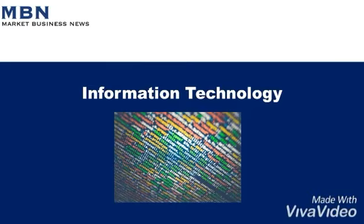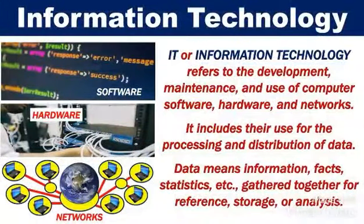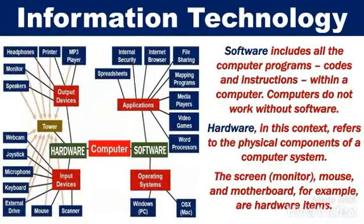What is information technology? IT, or information technology, refers to the development, maintenance, and use of computer software, hardware, and networks. It includes their use for the processing and distribution of data. Data refers to information, facts, and statistics gathered together for reference, storage, or analysis. Software includes all the computer programs within a computer. Computers cannot work without software.